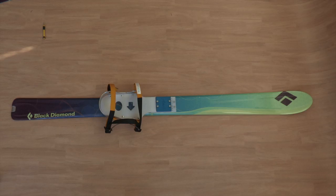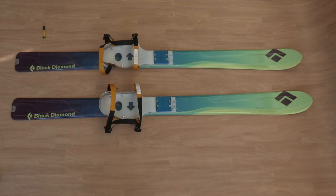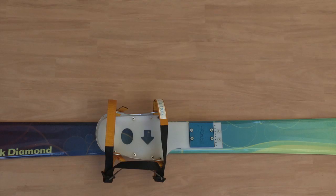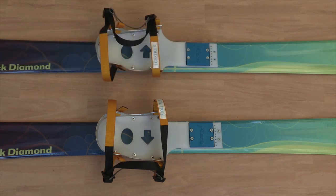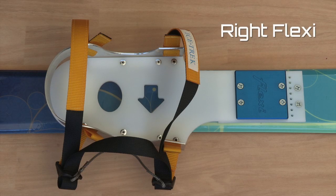To determine left and right, the arrow on the base plate points to the outside of the binding. The buckles are also located on the outside of the binding. So this one is a right-footed Flexi.